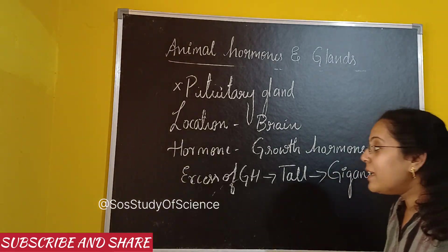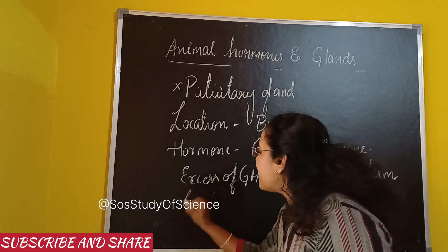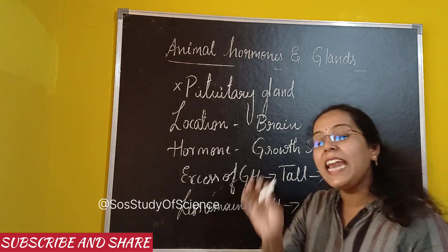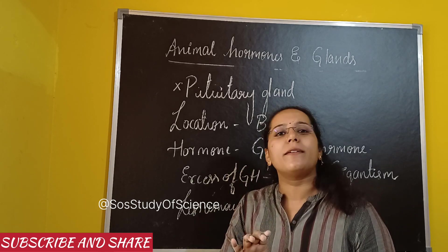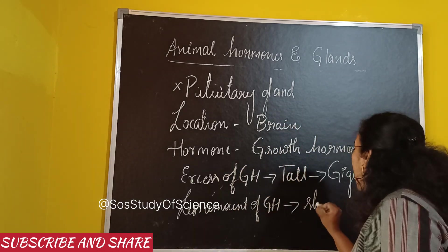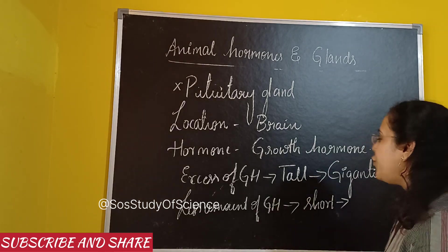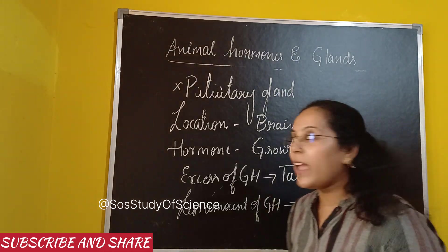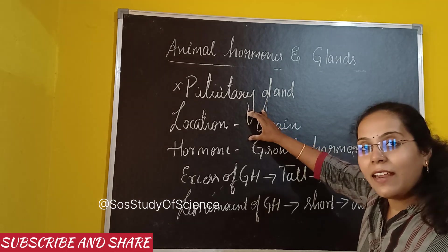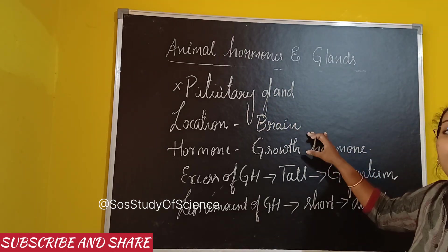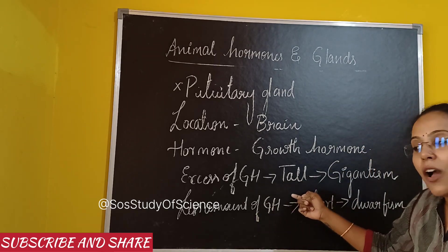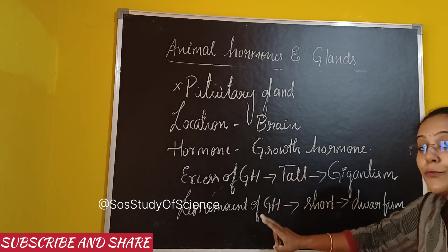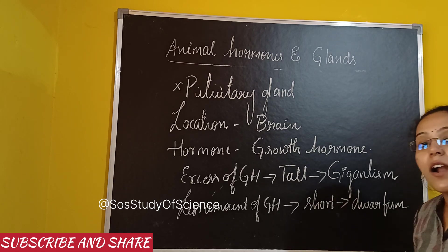Similarly, if the same growth hormone is secreted in a lesser amount, the person will be extremely short. This condition is called dwarfism. So remember: pituitary gland is present in the brain and releases growth hormone. Excess growth hormone causes gigantism; less growth hormone causes dwarfism.